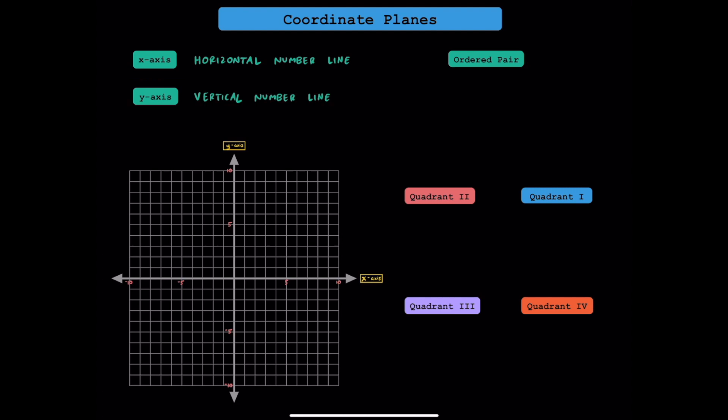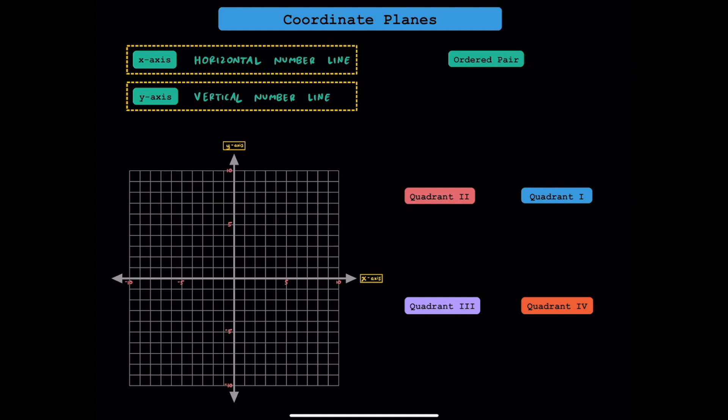Combining the x-axis and y-axis, we can plot the location of points in two dimensions. The horizontal number line tells us left and right, and the vertical number line tells us up and down.